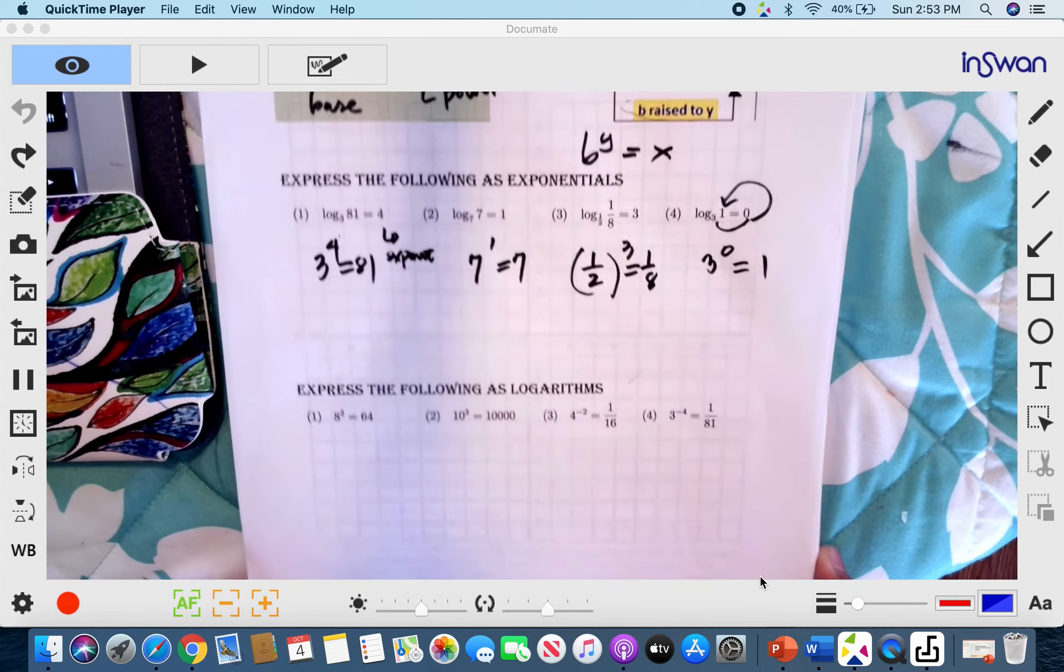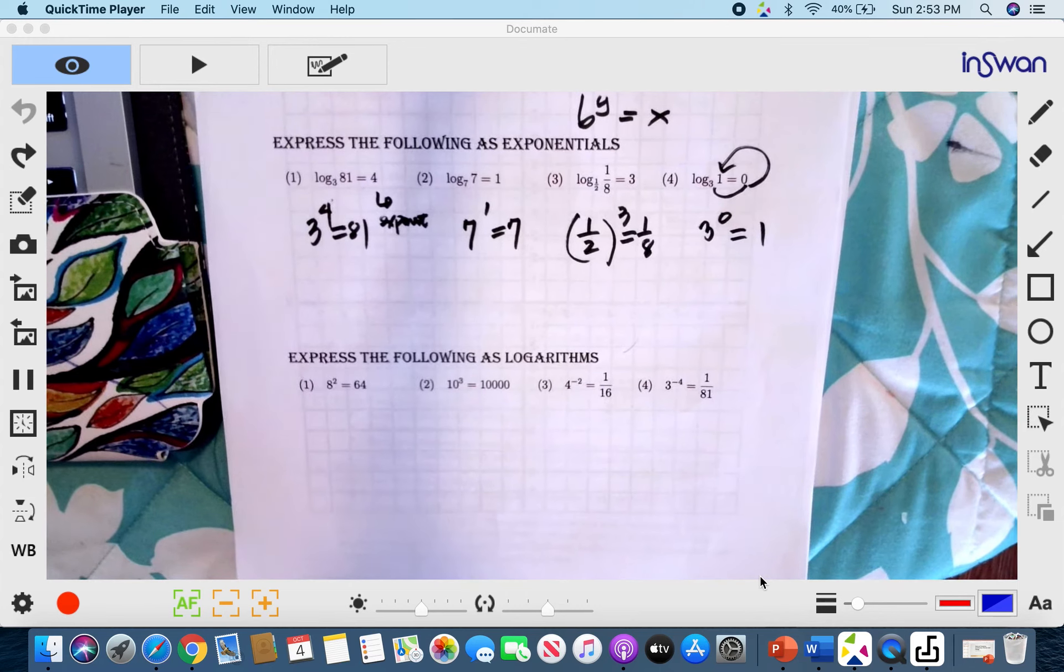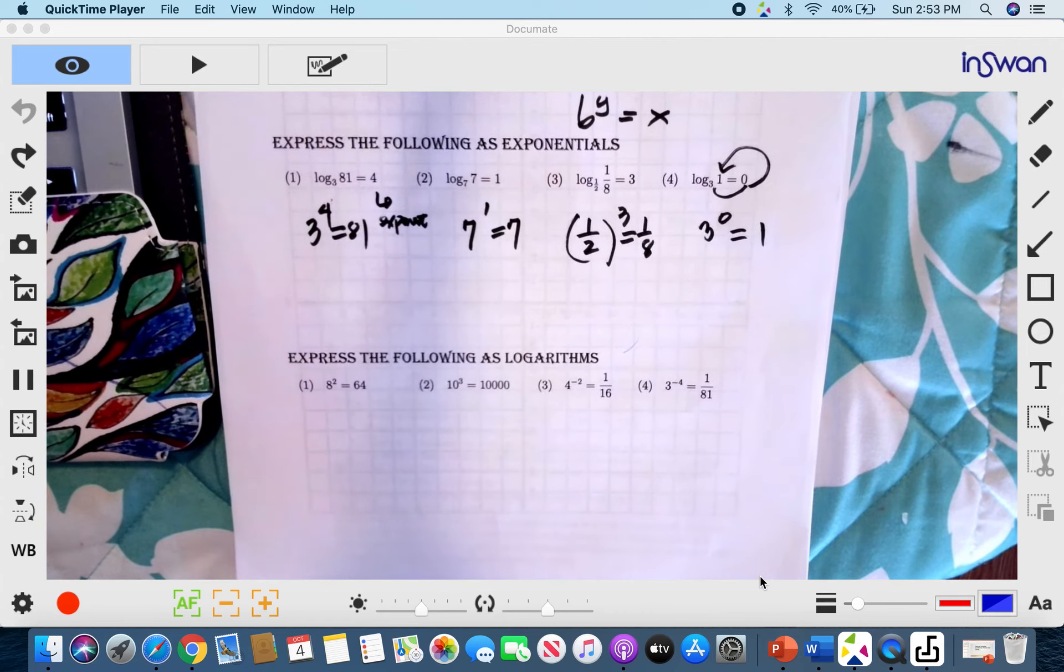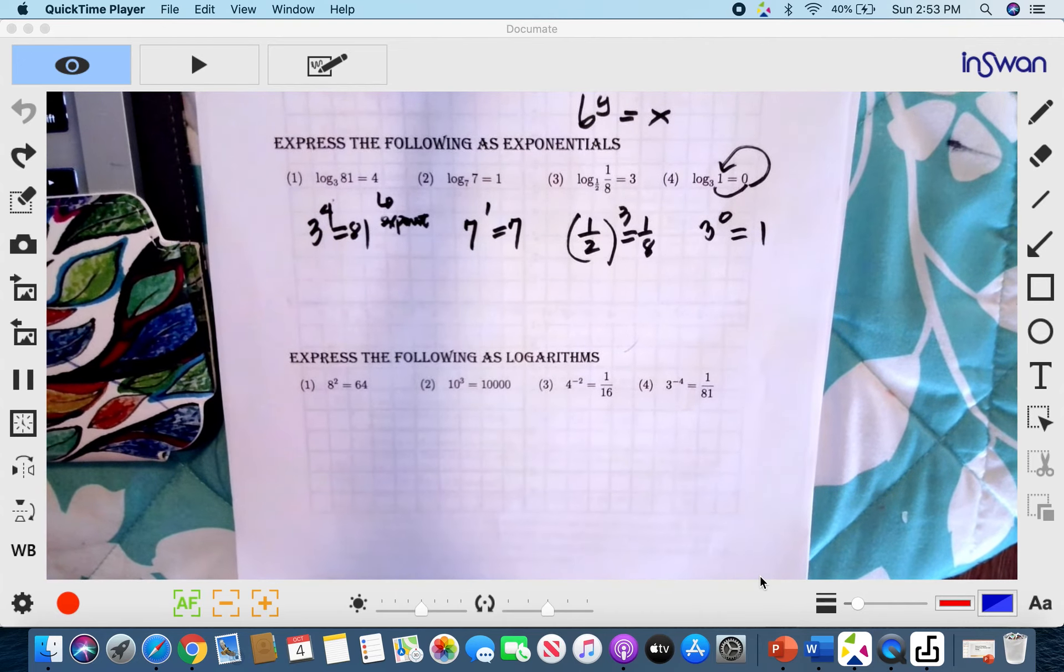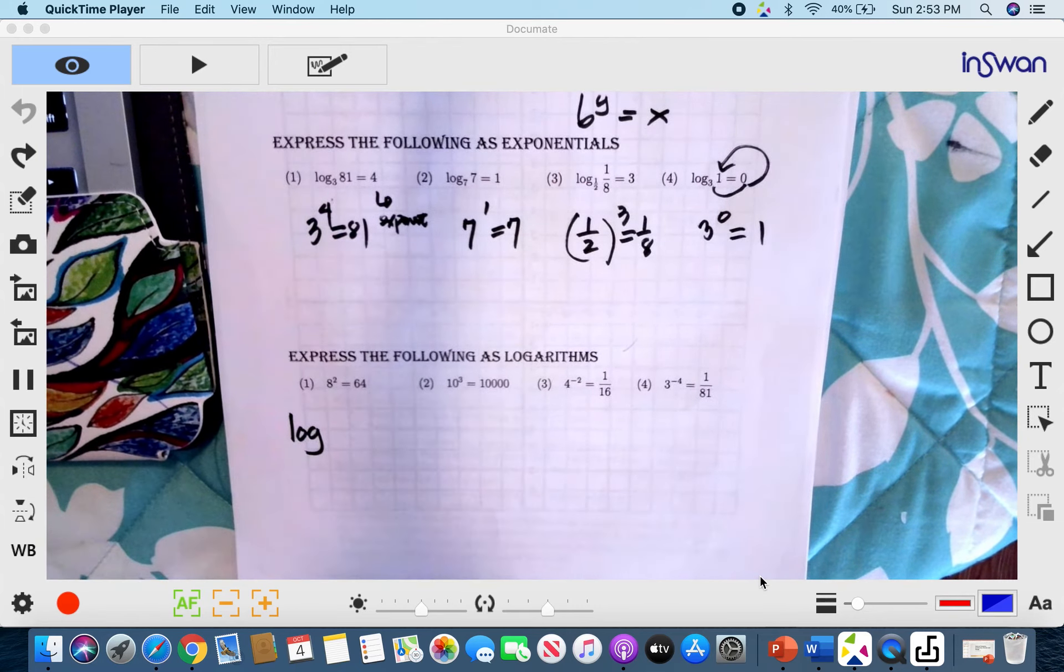Now, let's do the converse or the opposite of what we are doing. So how do we express it as logarithm? So these are common mistakes of students. The reason why you're converting it into logarithm is because you want to put logarithm in the equation. So the first step is to write the logarithm.